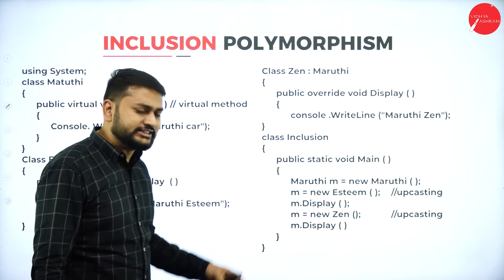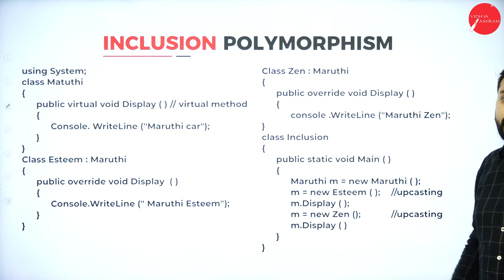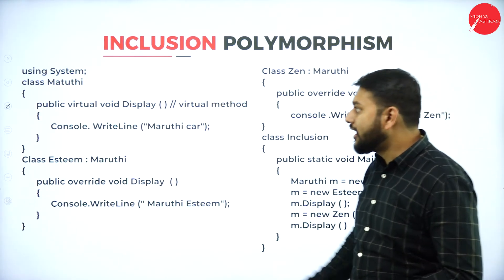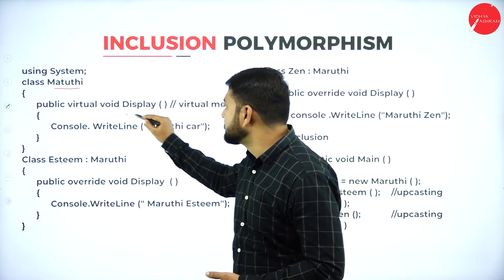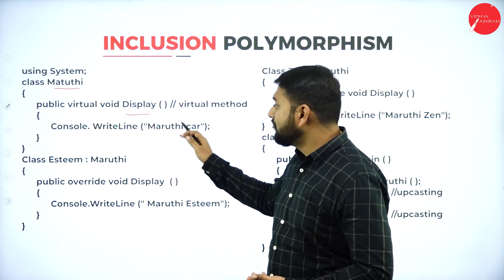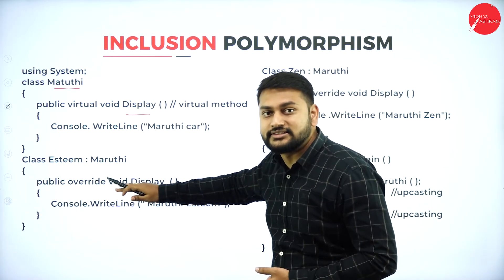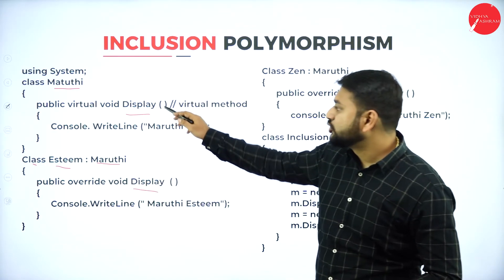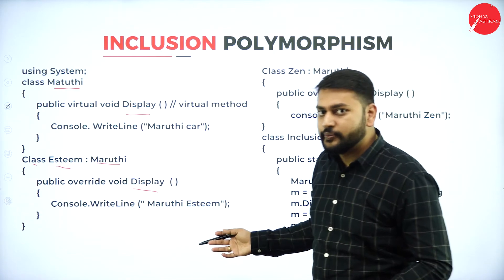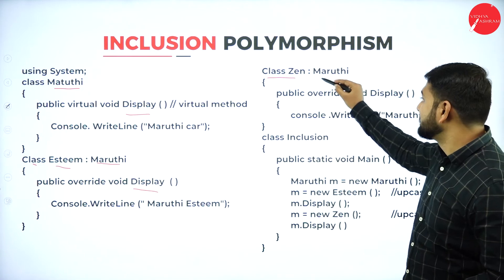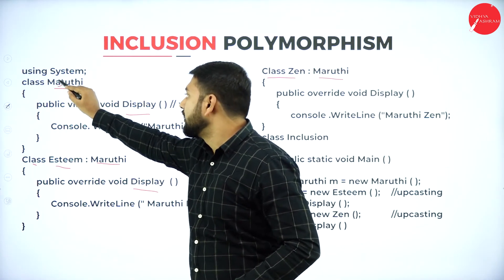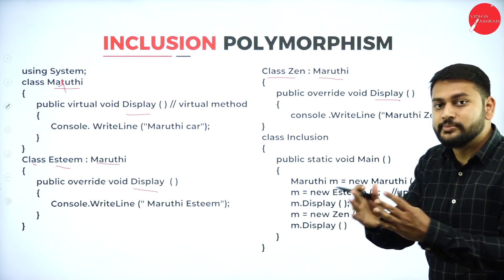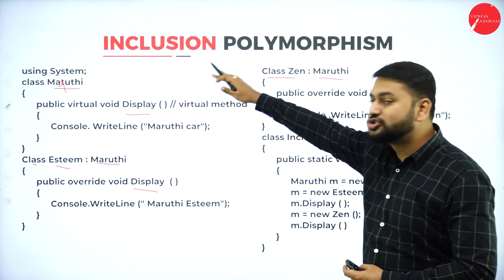For inclusion polymorphism, I have an example. I have a base class called Maruti with a method public virtual void display that prints 'Maruti car'. Then I inherit this class — class Esteem inherits Maruti and uses the display method. Similarly, class Zen also inherits Maruti. Using one base class for multiple subclasses is what I call inclusion polymorphism.